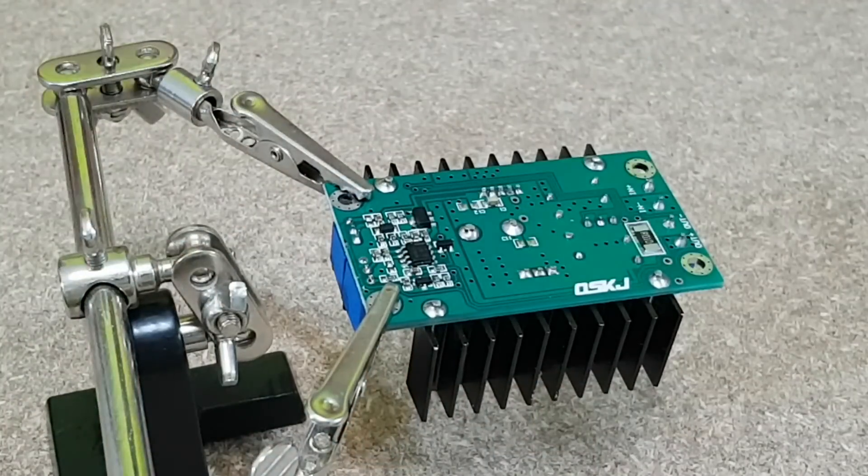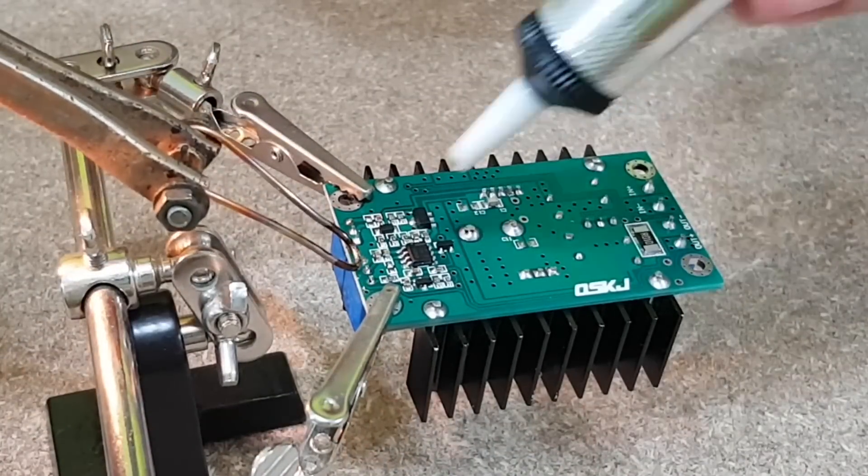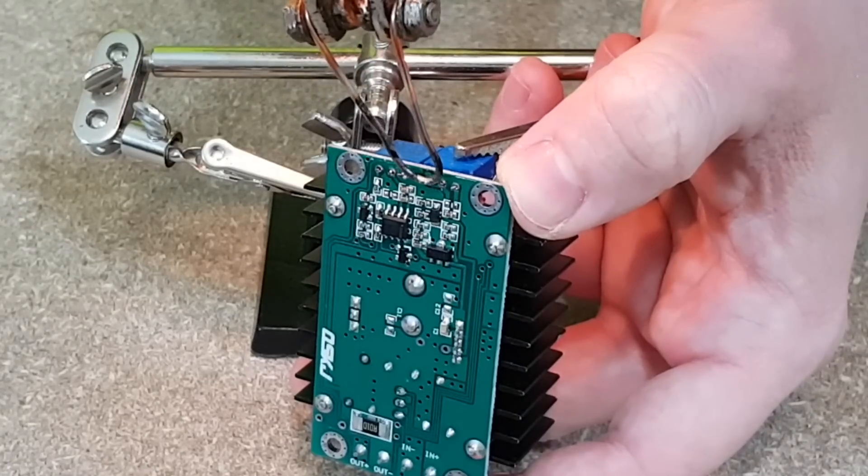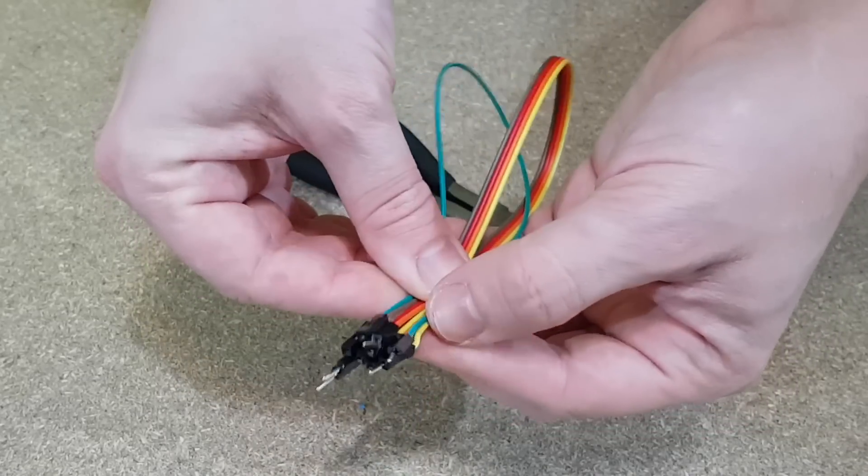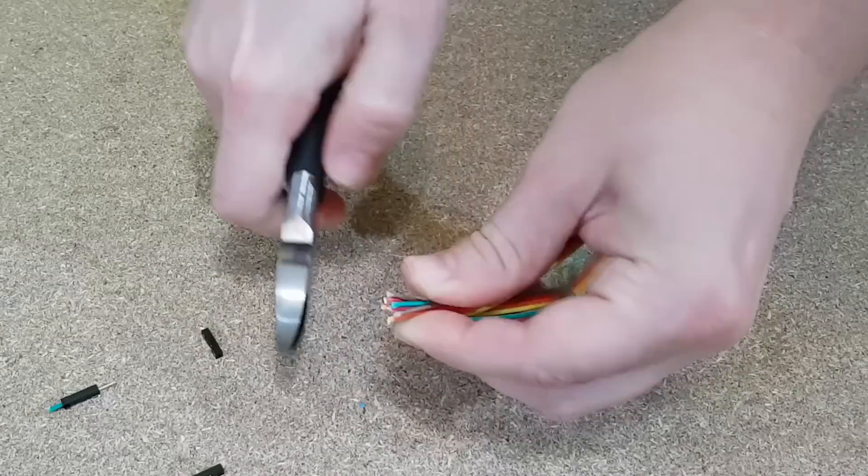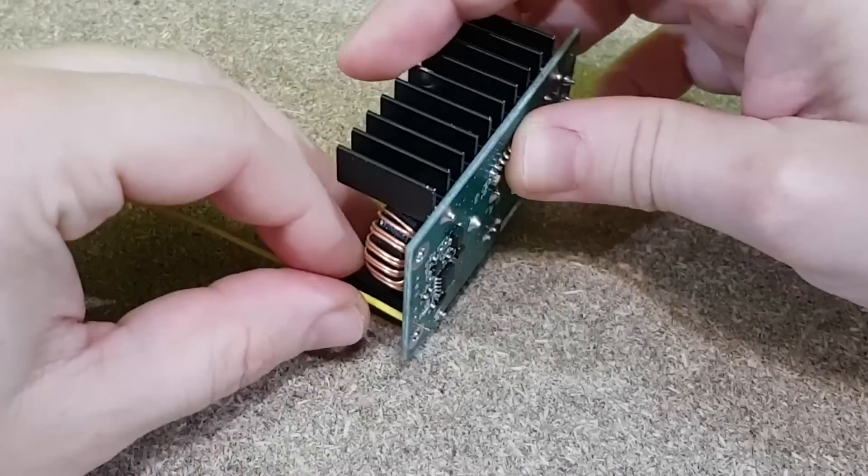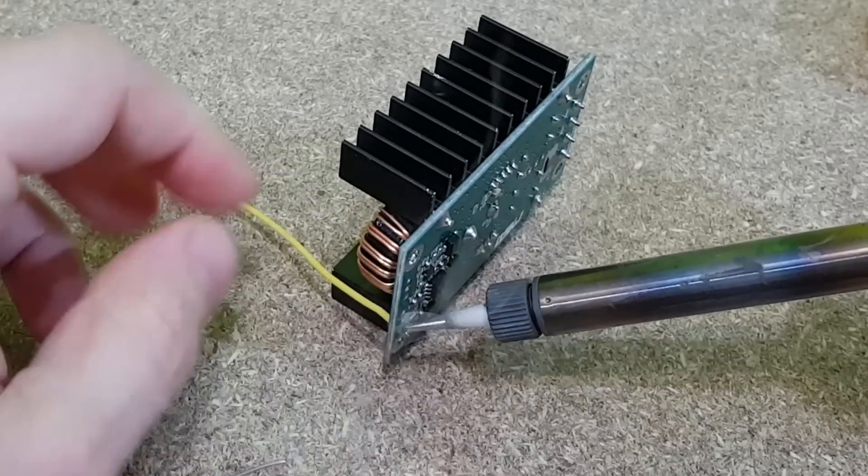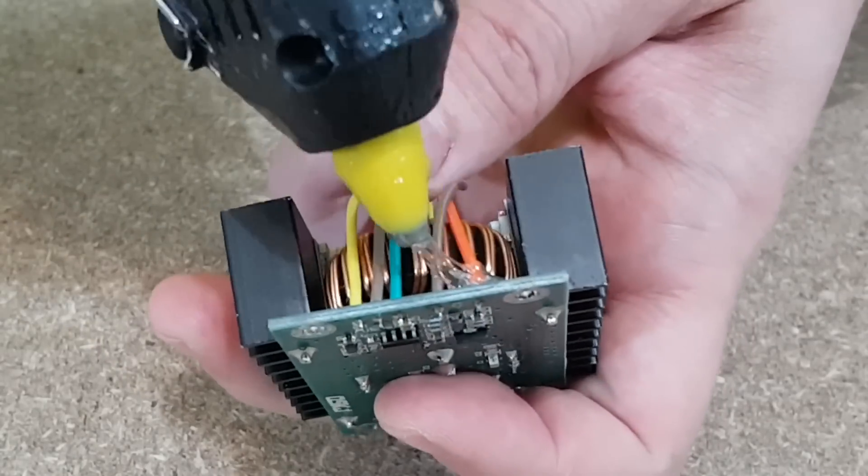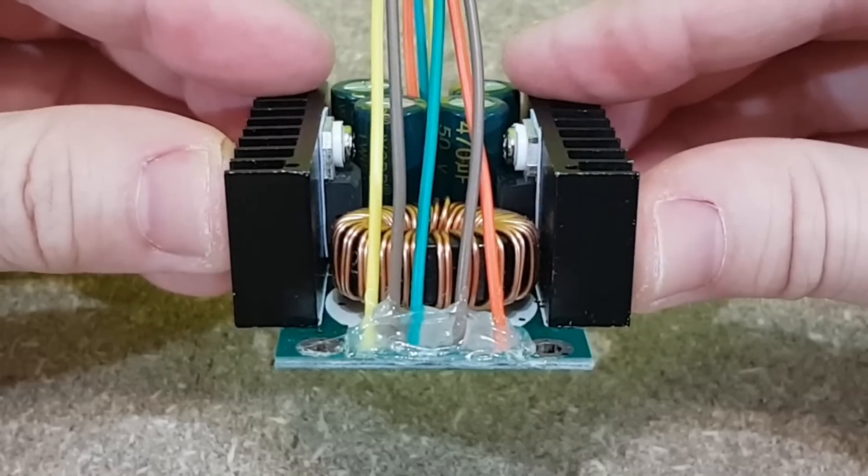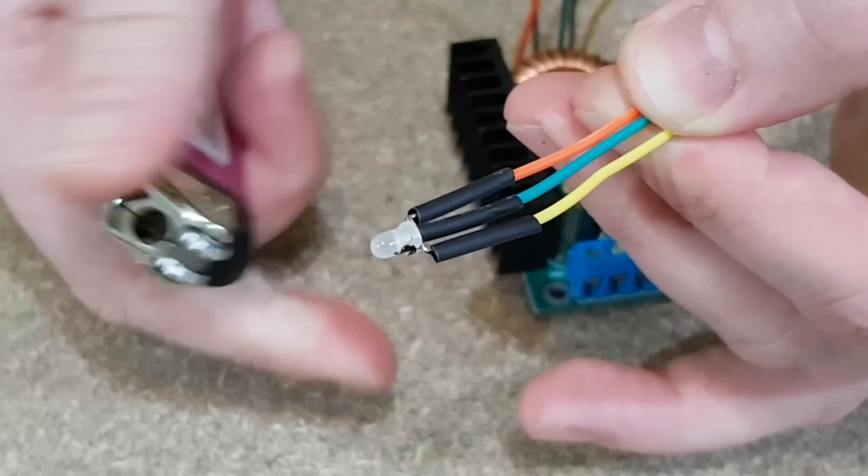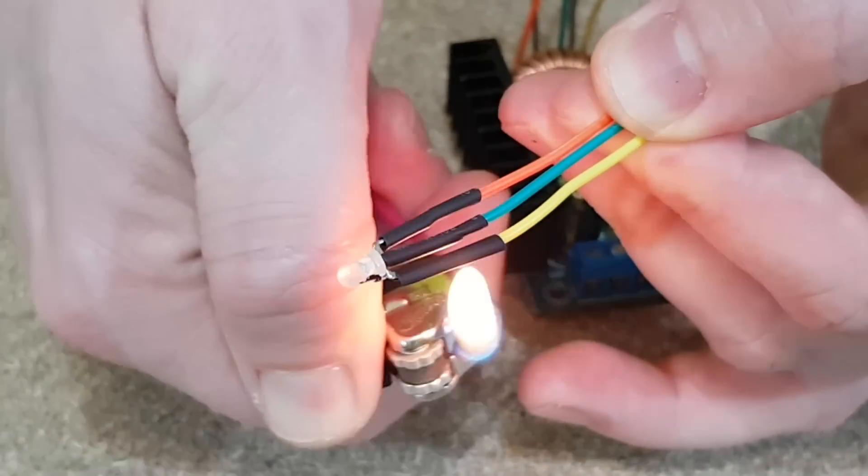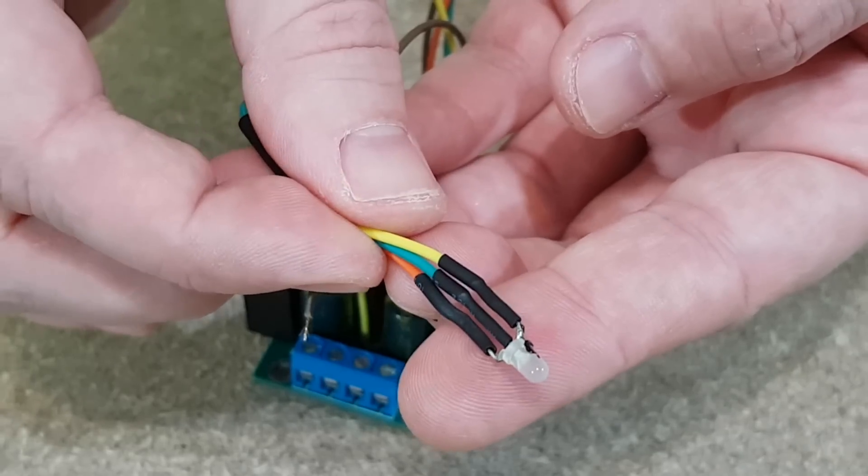For the step down converter the trimmer potentiometers will be replaced with panel mount potentiometers of the same value, 10 kilo ohms. I will use good quality flexible breadboard wires to extend the LED and potentiometers. To protect the wires and soldering joints until this project is finished I will cover them with hot glue. The step down converter LED will also be mounted on the front panel. I will insulate all soldering joints with shrinking tubes.